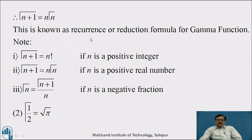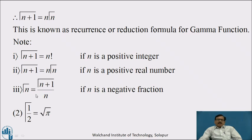This is known as the recurrence or reduction formula of the Gamma Function. Note the following properties: Γ(n+1) = n! if n is a positive integer — applying the reduction formula successively. Γ(n+1) = n · Γ(n) if n is a positive real number. And Γ(n) = Γ(n+1) / n if n is a negative fraction. One more important property: Γ(1/2) = √π.